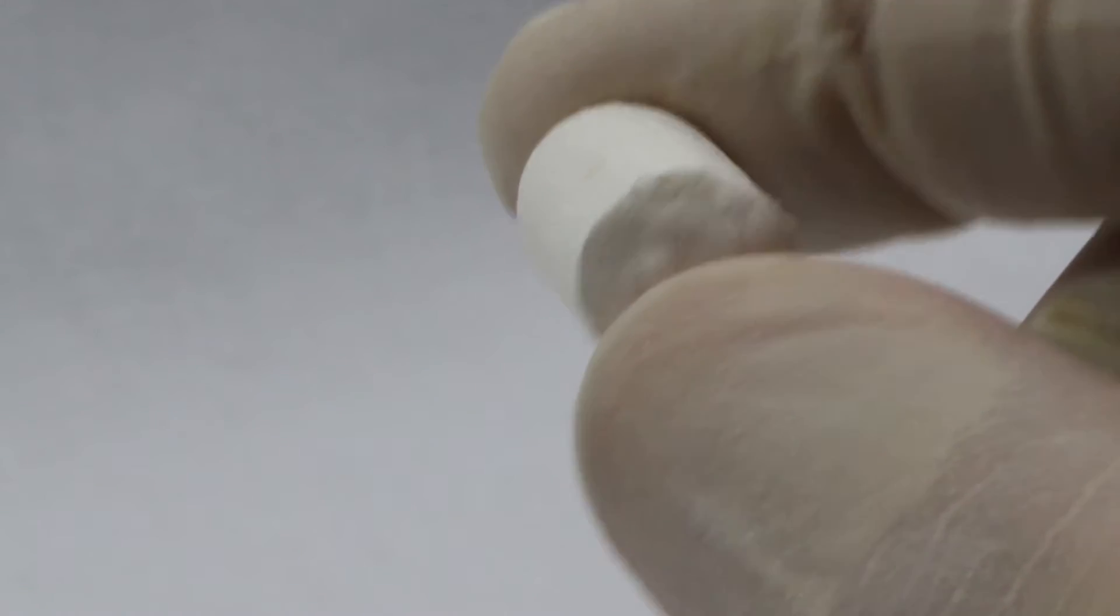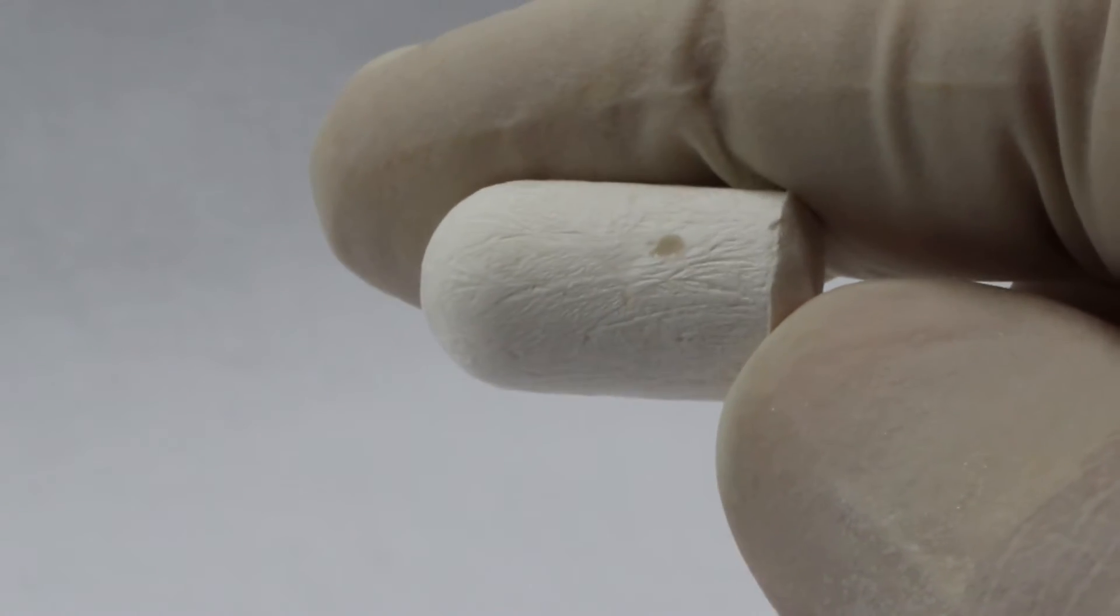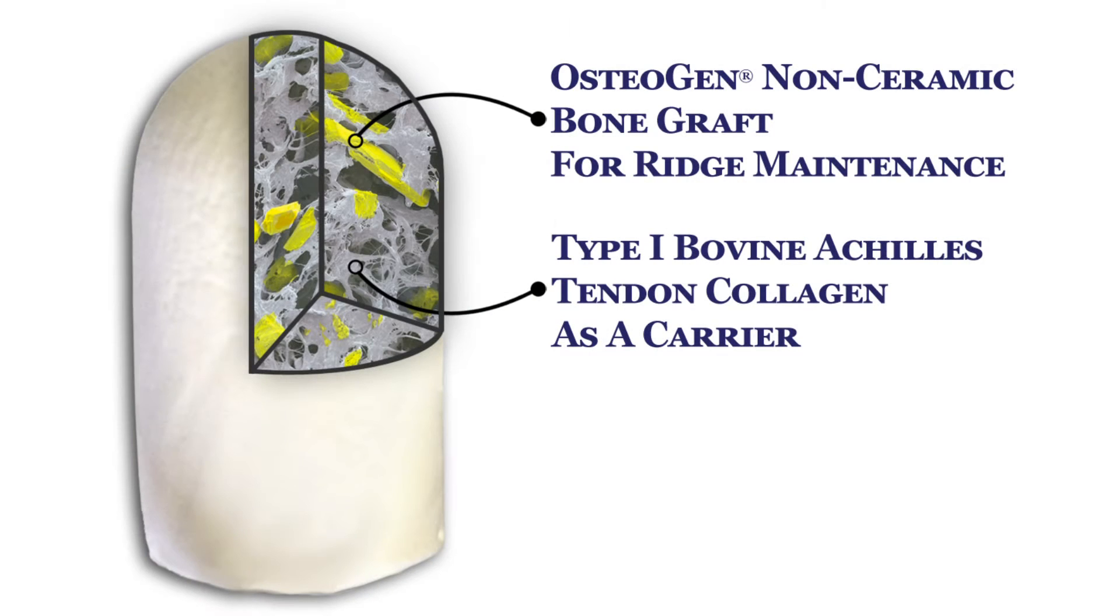The Osteogen Plug combines our Osteogen Bone Graft with a bovine Achilles tendon collagen which carries the graft for easy and efficient delivery to the site. This eliminates the time and hassle spent mixing and packing particulate bone grafts while also eliminating the potential for graft washout. Because the graft is contained by the collagen no membrane is required. Just drop into the socket and crisscross suture over top.